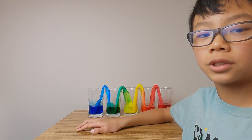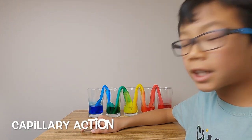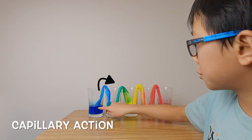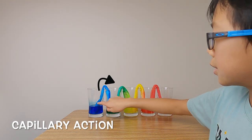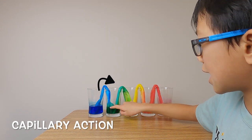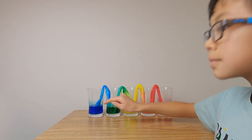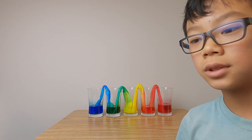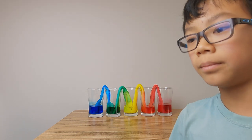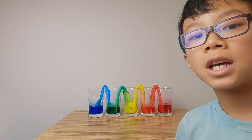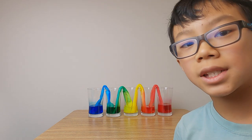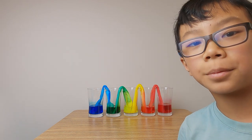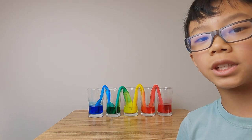As for capillary action, that is the process of how the water goes up the paper towels and into the next glass to mix with the other color. That is how plants get their water from the roots to the leaves. That happens because the water sticks to the sides of tiny tubes inside a plant and water particles stick to each other.